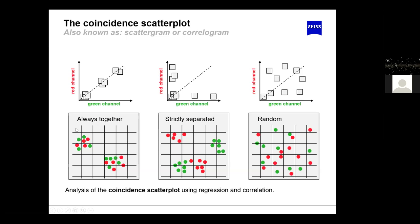The idea is to take all pixels and plot them according to their intensities in the red channel versus the green channel. A co-localizing pixel with two green and two red intensities is placed accordingly. If co-localizing, pixels align along a diagonal line; if strictly separated, pixels cluster along the axes. In the random case, there is a random distribution across the scatter diagram.